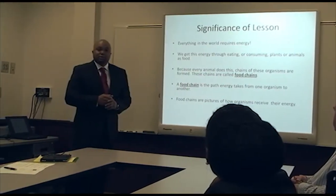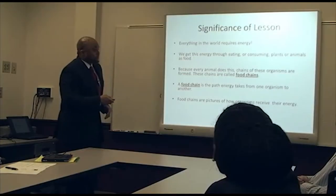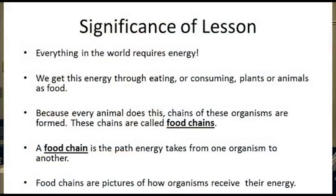Why is this important? Energy — everything in the world requires energy. As humans, we consume plants and animals to obtain energy. Because every animal does this, the energy transfer from one organism to another is organized into food chains. A food chain tracks how energy is passed from one organism to the next, and the food chain diagram illustrates this process.